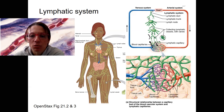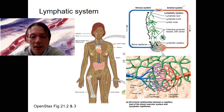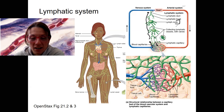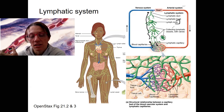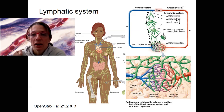Lymph travels through the lymphatic system. This is obviously oversimplified — I'm not going to tell you the names of these things besides lymph node. You may recognize that name — these nodes contain structures that help to filter the lymph.